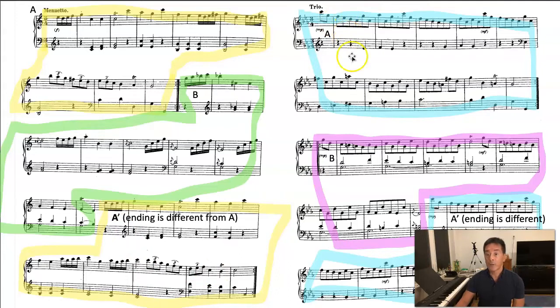In the trio, we again have three big sections. Again, look for the repeat sign. And then you call this section A. Then it changes to something different. Looks pretty similar. But again, through listening, you can kind of tell that they're different. And then here again, A prime comes back. It looks exactly the same. Except again, the ending is different. It ends in a different key.